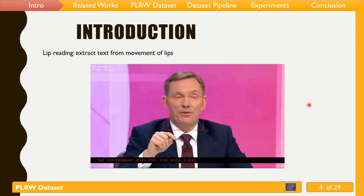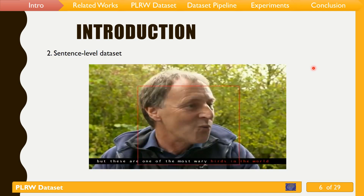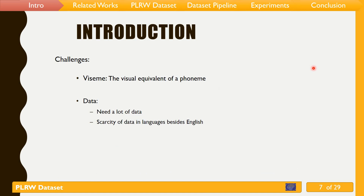Lip reading datasets can be fit into two categories: word-level and sentence-level datasets. Word-level datasets are those in which each sample has a word type, and usually the word offset of each sample word exists in annotation files. At the sentence level, a part of a video that contains an utterance or sentence is split. There are some challenges that make lip reading a difficult task.